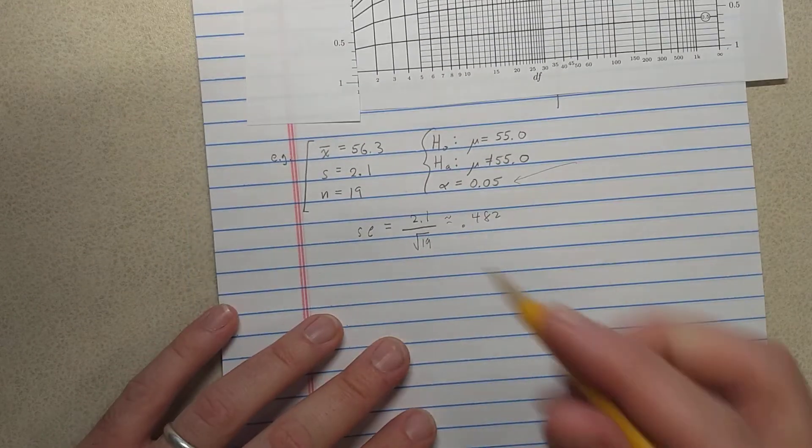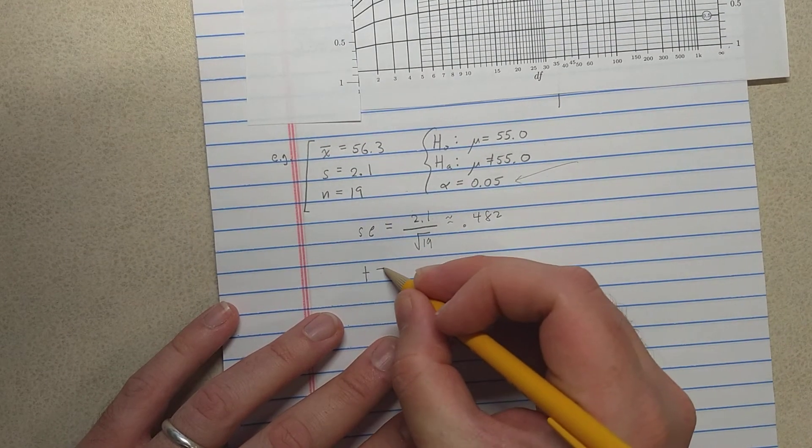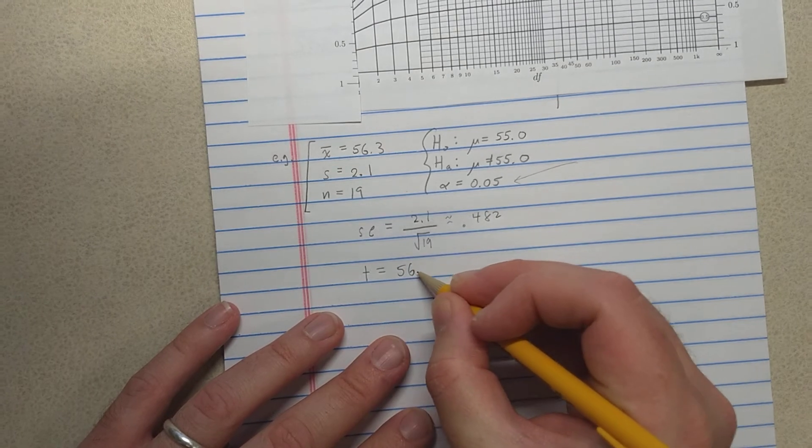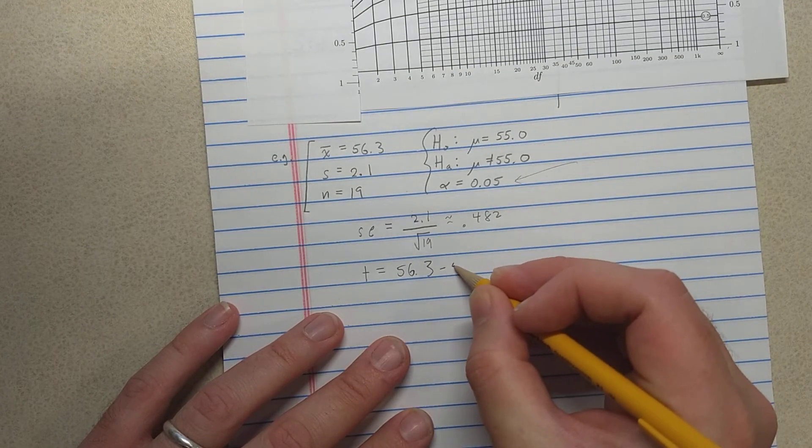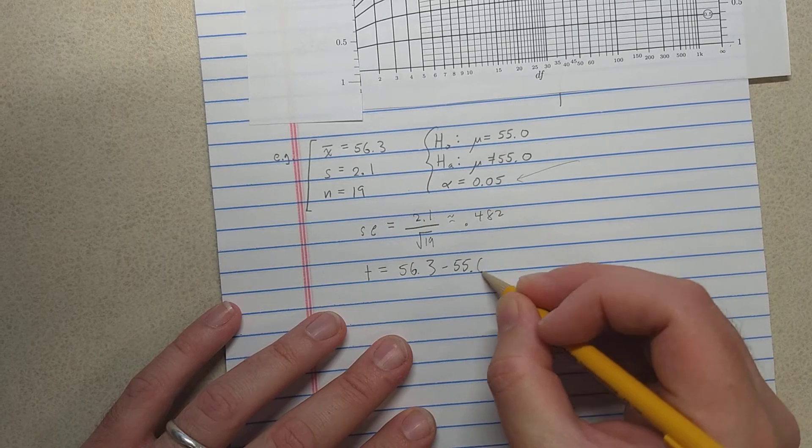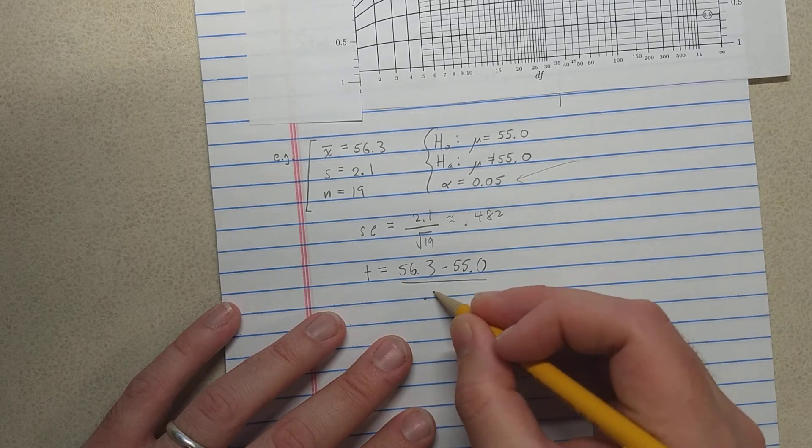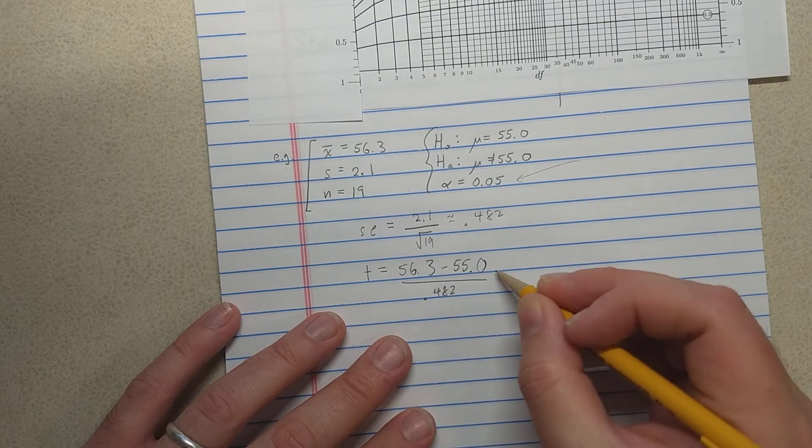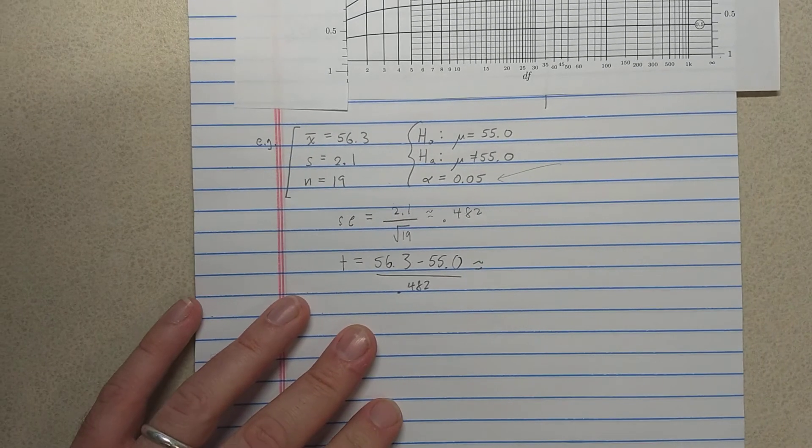Then what I'll do is compute the test statistic, which will be a t-score. That should be 56.3 minus the null hypothesis value 55.0 divided by that standard error 4.82.